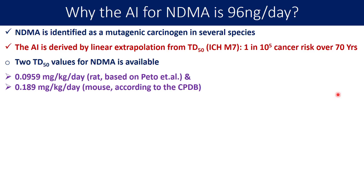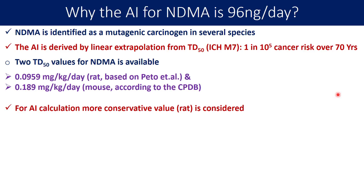Now, which TD50 value should be considered by US FDA or ICH for calculation of acceptable intake? The value of 0.0959 milligrams per kg per day is more conservative compared to 0.189 milligrams per kg per day. To be on the safe side, all regulators have considered the more conservative value.